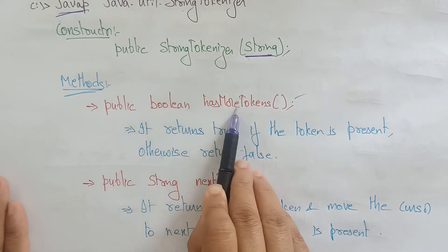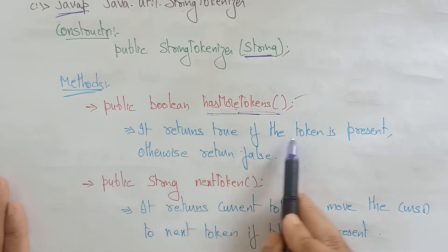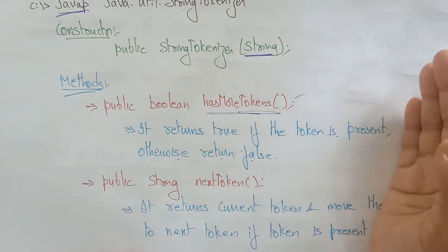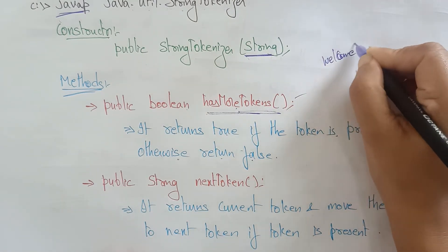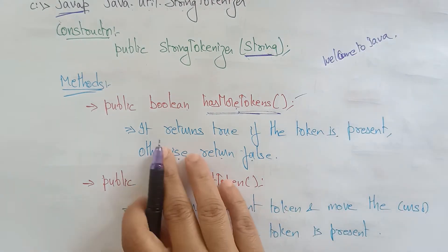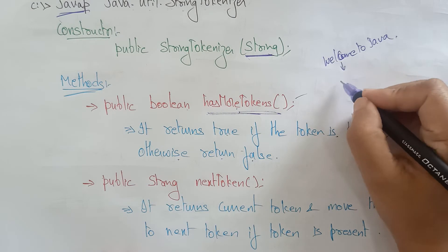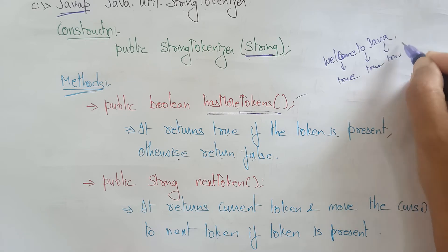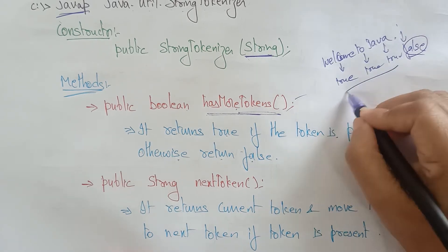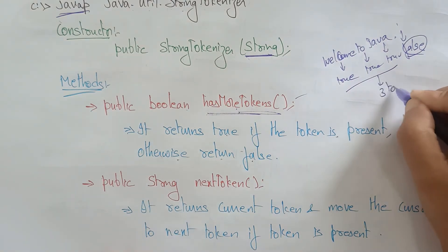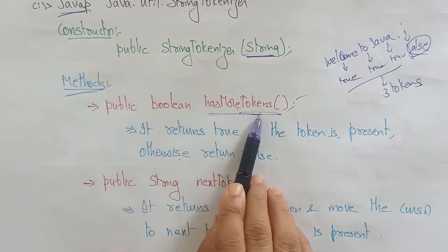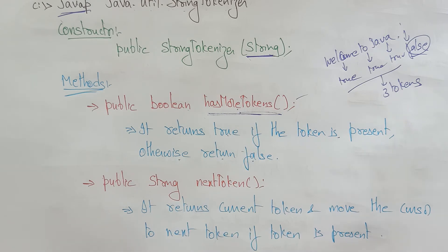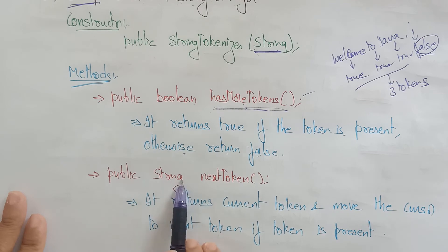The first method is: public boolean hasMoreTokens(). This returns true if a token is present, otherwise returns false. For 'welcome to java' — three tokens — it returns true for 'welcome', true for 'to', true for 'java', then false when there are no more tokens, and the program ends.